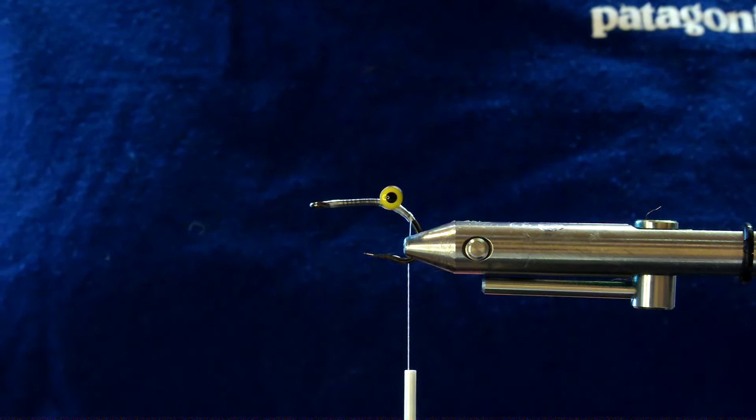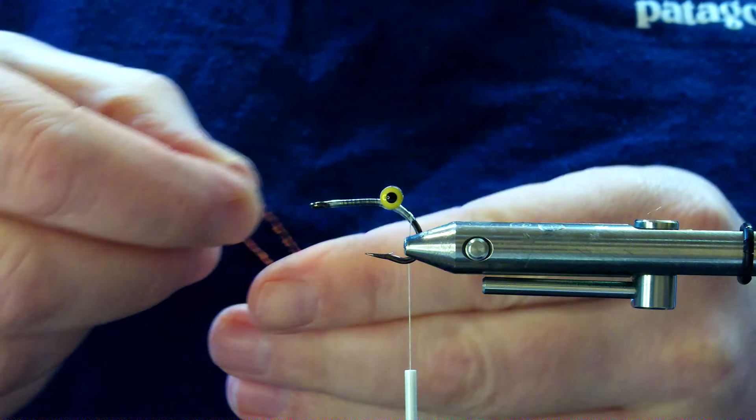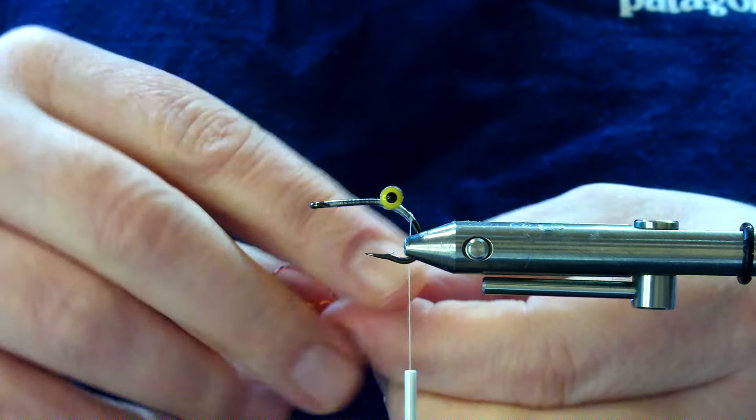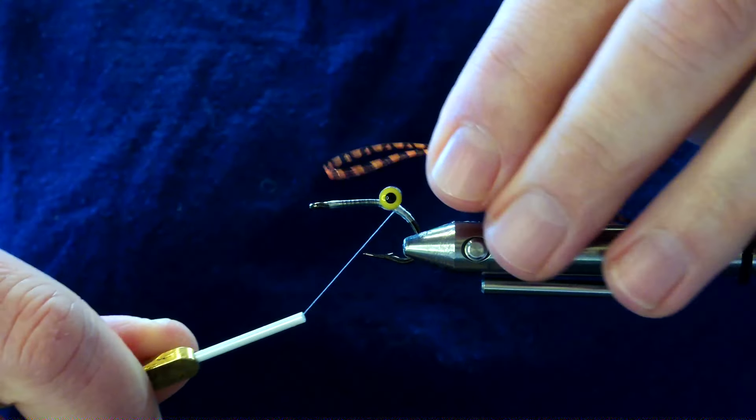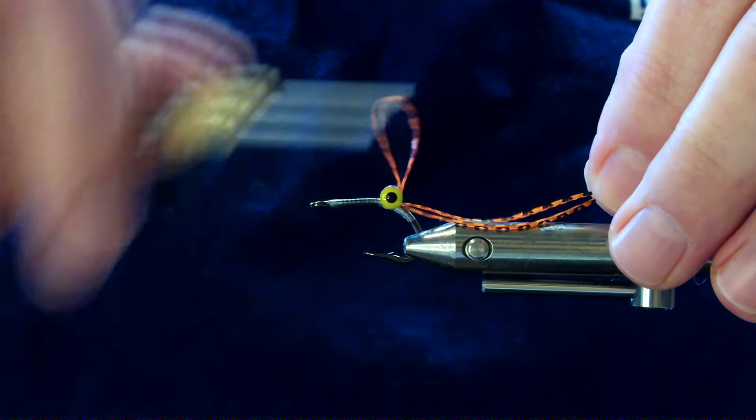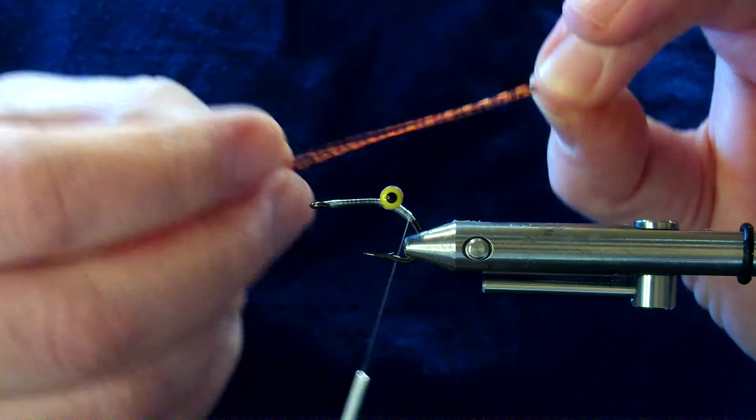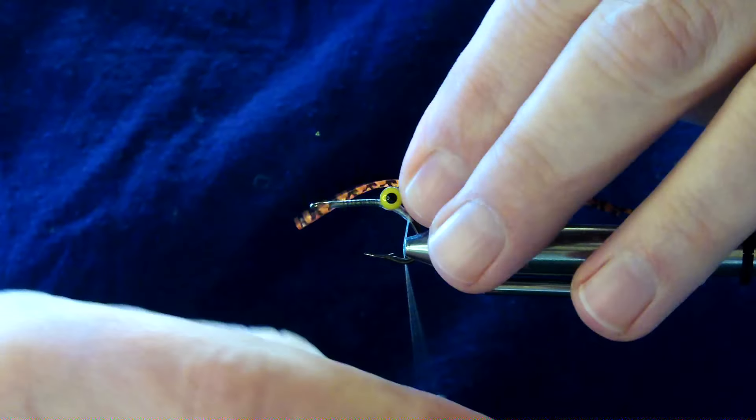So I've just brought the thread all the way back around the bend of that hook and I've got a single strand of barred orange crazy legs. Just bring that thread to behind the eye and I'm just going to double it over into a loop.